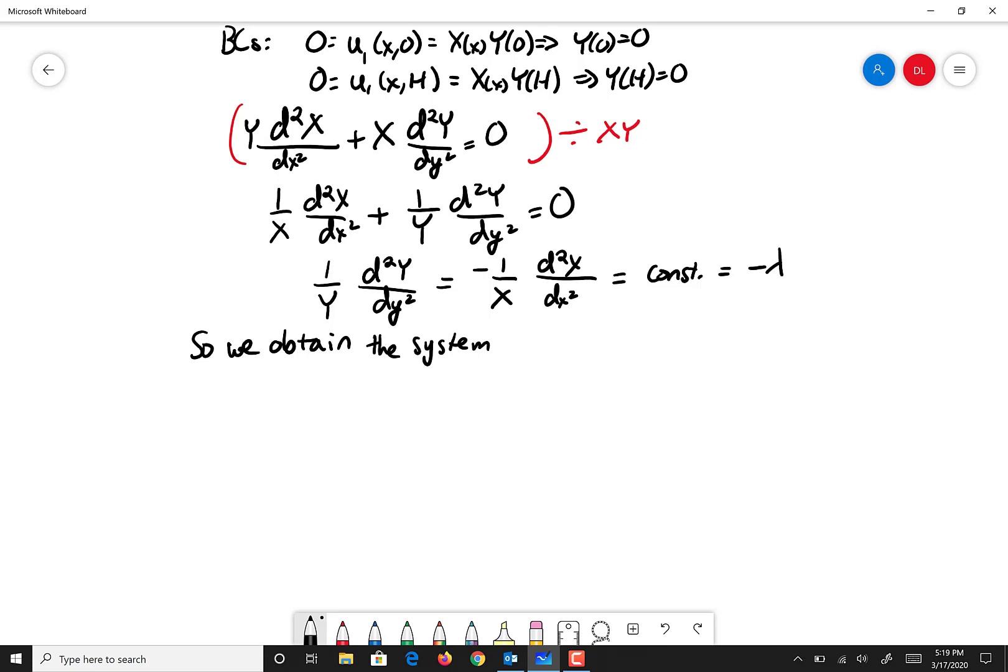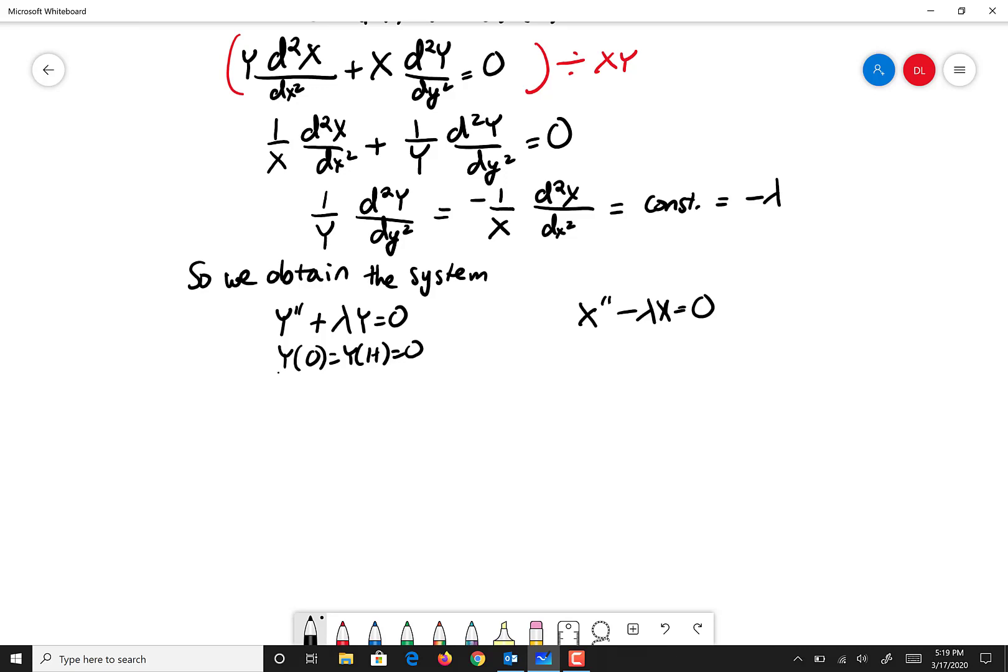So we do that. We obtain two equations that we need to solve, the usual suspect. So we get the system, y double prime plus lambda y is equal to 0, y of 0 equals y of H equals 0, and we're going to get x double prime, abusing nastily my derivative notation, except this one's not going to be a plus, it's going to be a minus lambda x equals 0. So this first one is an eigenvalue problem that we've solved before, so I'm going to cheat and say from previous work, we know lambda sub n is going to be n pi over H for n equals 1, 2, etc., and y sub n is going to be sine of n pi over H for y.